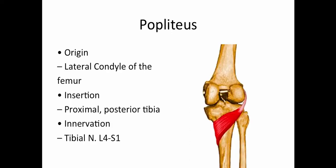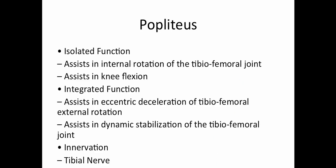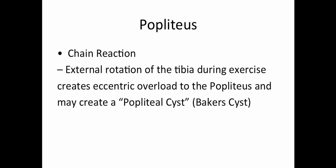The popliteus originates on the lateral condyle of the femur and inserts on the proximal posterior tibia. Its isolated function is to assist in internal rotation of the tibiofemoral joint and assist in knee flexion. Its integrated function includes assisting in eccentric deceleration of the tibiofemoral joint. Regarding chain reactions, external rotation of the tibia during exercise creates an eccentric overload to the popliteus, which may create a popliteal cyst — also known as a Baker's cyst.